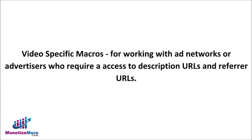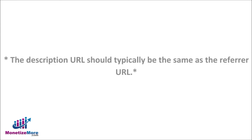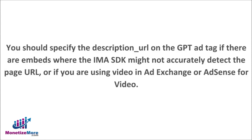You may work with ad networks or advertisers who require access to description URLs and refer URLs, both of which DoubleClick for Publishers supports. When using redirect ad tags and you'd like to expand the description URL parameter from the original GPT ad tag's description_url query parameter, note that the description URL should typically be the same as the refer URL. You should specify description_url on the GPT ad tag if there are embeds where the IMA SDK might not accurately detect the page URL, or if you are using video in AdExchange or AdSense for video.